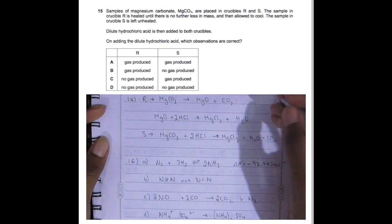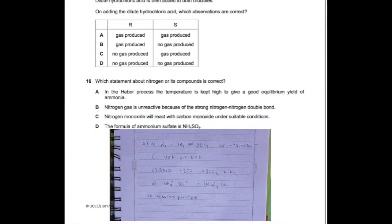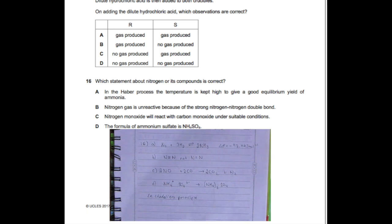In S it doesn't get heated, so right away you're going to use magnesium carbonate plus HCl, which gives you magnesium chloride plus water plus carbon dioxide. In R, is there a gas produced? No, just water. But in S, is there a gas produced? Yes, there is. That's why the answer is C.